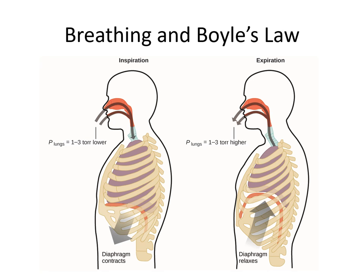Boyle's law is important for a lot of different things, including breathing. When you try to breathe in, your diaphragm contracts, which expands the lungs to a larger volume. Because the lungs have a larger volume, the pressure drops inside the lungs. That smaller pressure inside compared to outside means air flows in — you breathe in. When you breathe out, the diaphragm relaxes, pushing the lungs smaller again. With that smaller volume, pressure increases and forces air out of the lungs.